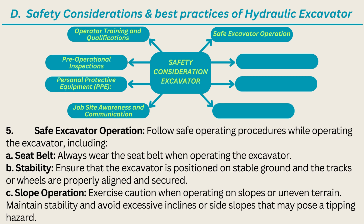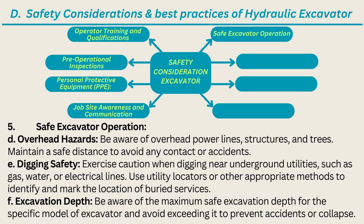5. Safe excavator operation: Follow safe operating procedures while operating the excavator, including: a) Seat belt — always wear the seat belt when operating the excavator. b) Stability — ensure that the excavator is positioned on stable ground and the tracks or wheels are properly aligned and secured. c) Slope operation — exercise caution when operating on slopes or uneven terrain; maintain stability and avoid excessive inclines or side slopes that may pose a tipping hazard.